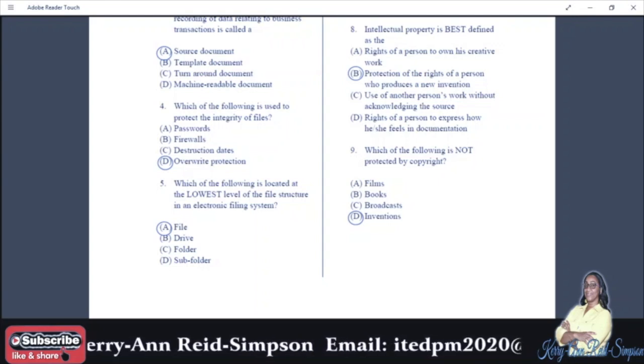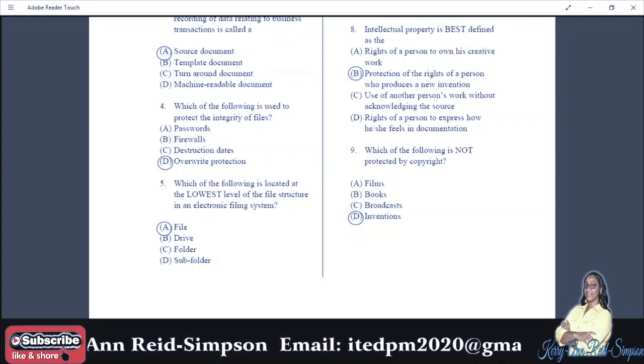Number nine: which of the following is not protected by copyright? A: films, B: books, C: broadcasts, D: inventions. And your answer is D, inventions. Patents protect inventions, not copyright.